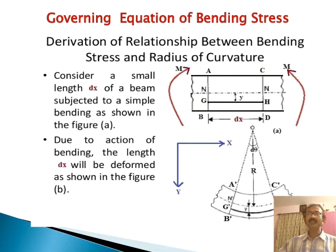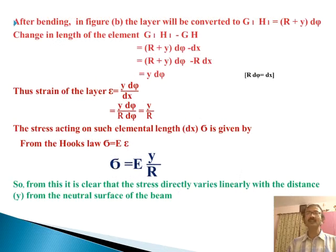R is the radius of curvature. The layer gh after bending will be converted to g dash h dash. The length will be increased. After bending, from this figure, it is clear that g1 h1 will be R plus y times d phi. Change in length of the element dx, that is g1 h1 minus gh, is finally y d phi. The strain on that layer is the deformed length divided by original length, finally y by R.